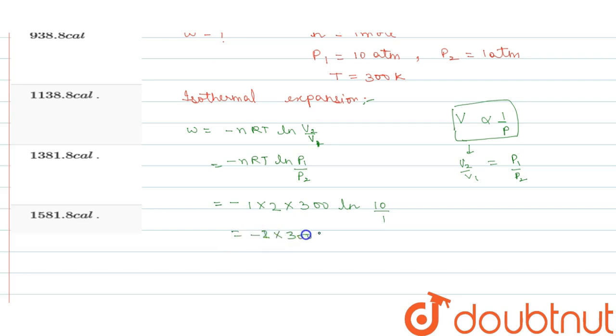We solve: minus 2, 1 into 2, multiply 300, multiply LN 10 value 2.303. The value is 938.8 calorie.